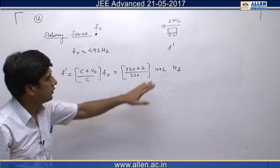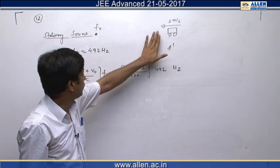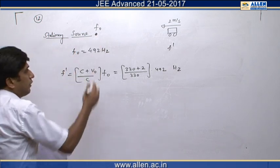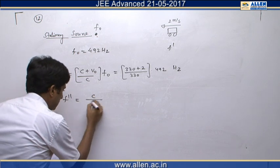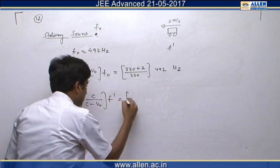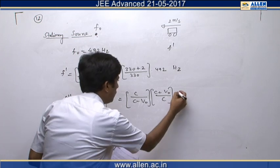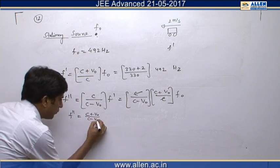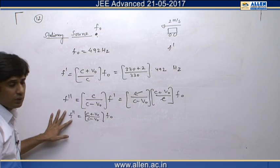Now in the second case, this car will behave as a source of frequency f'. We have to calculate the frequency detected by a detector kept at the location of the source. If the frequency detected is f'', then f'' will be given by c/(c - v₀) times f'. Using the value of f' from the previous condition, we get f'' equals c/(c - v₀) times (c + v₀)/c times f₀. From here we get f'' as (c + v₀)/(c - v₀) times f₀. This is the frequency of the reflected wave received by the detector at the source location.